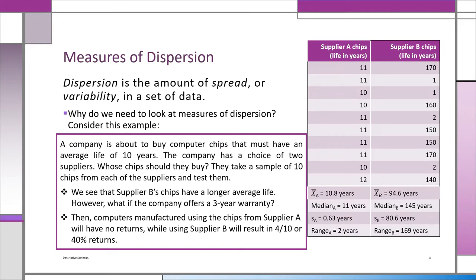But if you look carefully at the data, you'll see A is very consistent. Every one of the 10 chips lasted 10 or more years. Look at B's chips — some lasted 170, 160, or 150 years, but several didn't even reach year three. In fact, four out of 10 didn't make it to year three. So we need a way to measure this kind of dispersion or variability.